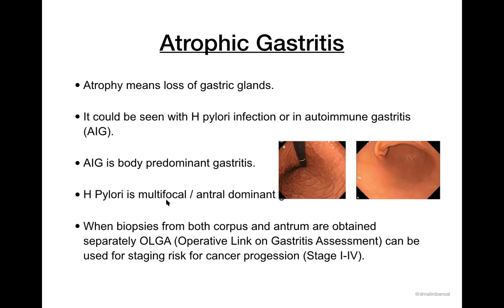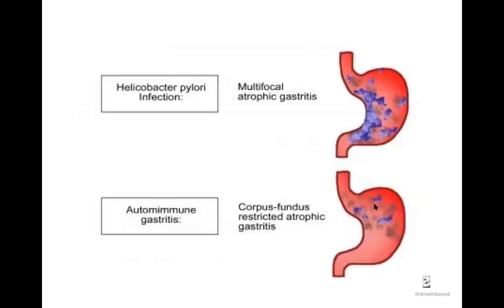When biopsies are taken separately from the corpus and antrum, the OLGA system can be used for staging the risk of progression to cancer — it is the Operative Link on Gastritis Assessment. This is a pictographic representation: in autoimmune gastritis the disease is largely confined to the body of the stomach, whereas in H. pylori-associated atrophy it is going to be multifocal, involving the antrum, body, and some part of the cardia.